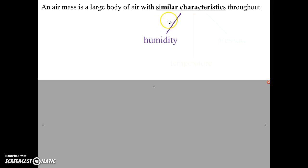All of the air in an air mass will have the same approximate humidity, or amount of water vapor. All of the air in an air mass will also have the same approximate temperature. And because of varying temperatures and humidities, those will impact the pressure of the air.